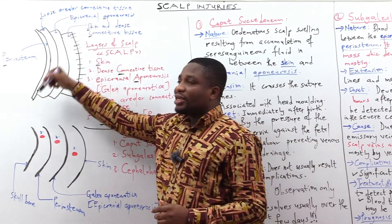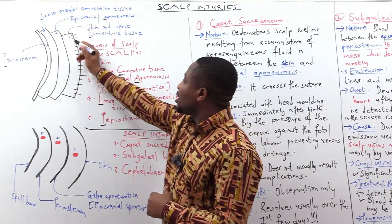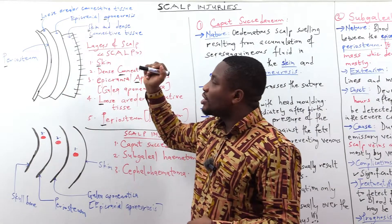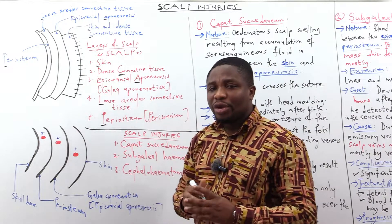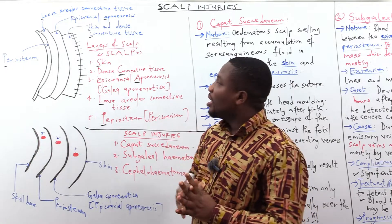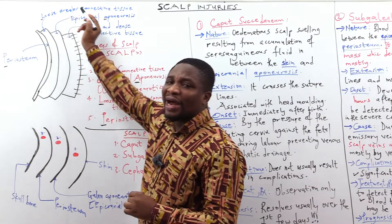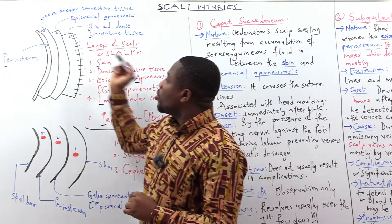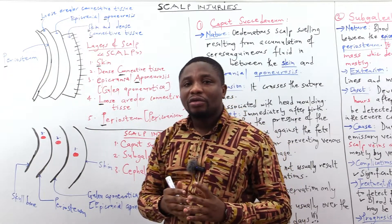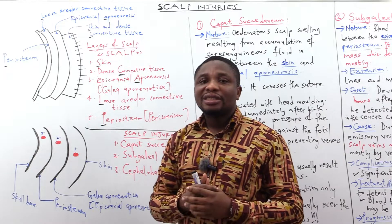The layers of the scalp, from the outermost to the innermost, are: the skin and the dense connective tissues together, then the epicranial aponeurosis — also known as gallea aponeurotica — then below that is the loose areolar connective tissue, and below that is the periosteum, also known as the pericranium because the periosteum covers the cranium.